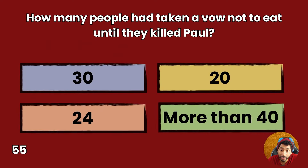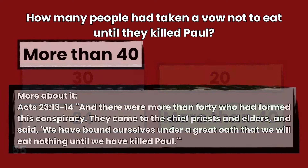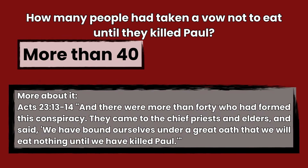Question 55: How many people had taken a vow not to eat until they killed Paul? 30, 20, 24, or more than 40? Answer: More than 40. Acts 23:13-14 — And there were more than 40 who had formed this conspiracy. They came to the chief priests and elders and said, We have bound ourselves under a great oath that we will eat nothing until we have killed Paul.